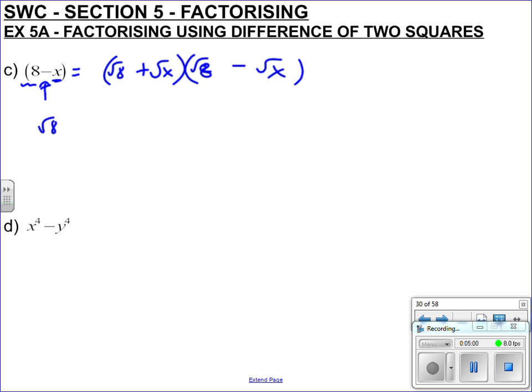But, you know, root of 8, that's the same as, we might as well test out our indices. So that's root 2 times root 4, and that's 2 times root 2. So you could write this as 2 root 2 plus root x, times by 2 root 2 minus root x.